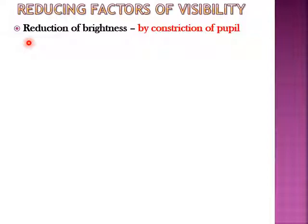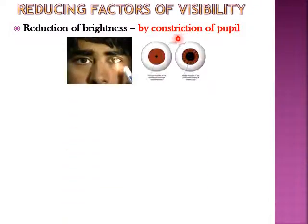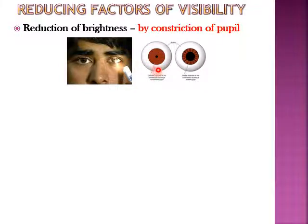First, reduction of brightness. Brightness means the high intensity light beam. It is due to constriction of the pupil. When a high intensity light beam falls directly on the human eye, the muscles present in the eye either contract or dilate. As a result, the object in front of the eye is not visible clearly.